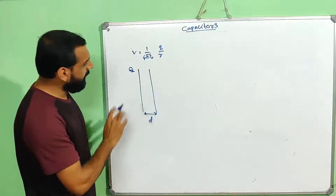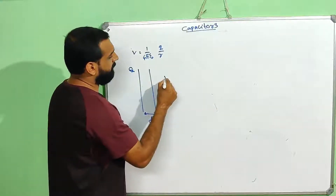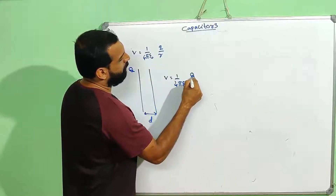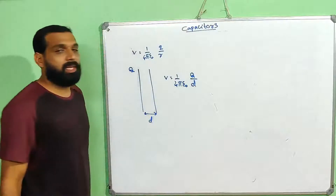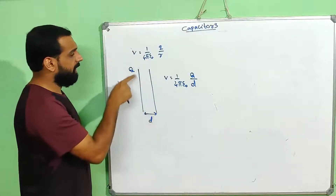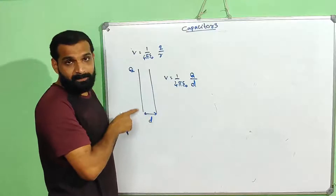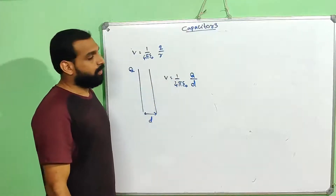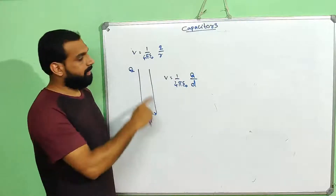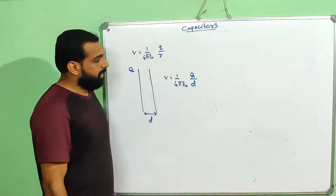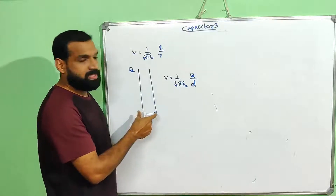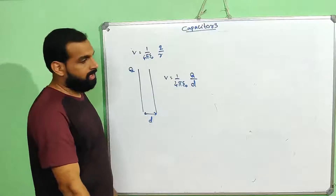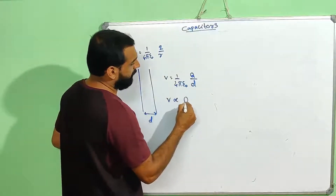The potential is V equal to 1 by 4 pi epsilon 0 into q by d, because the distance is d — the separation is d. On this plate the charge is q and the potential is this. For a given capacitor, this distance is constant. Therefore V is proportional to q.